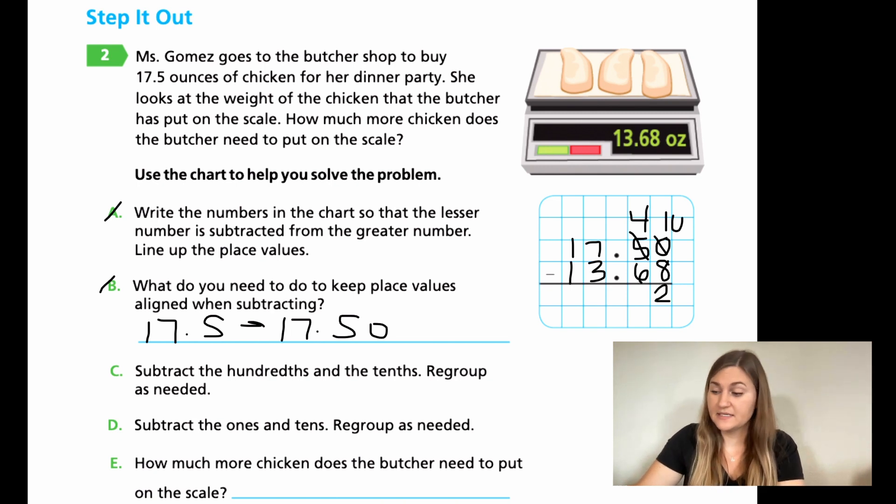Now going to the tenths place value. I have 4 minus 6. 4 is smaller. I can't do that, so I again have to borrow. I borrow from the 7, and I make it a 6. Now I'm bringing over 10, which is going to make that 4 now a 14. So 14 minus 6 is going to be 8.